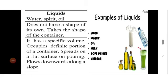Examples of solids are metal pieces, iron, sugar, wax, etc. Second is liquid. Liquid does not have a shape of its own; it takes the shape of the container. Liquid has a specific volume. If kept in a container it occupies the shape of the container, but if it is spread on a flat surface it starts flowing. Examples of liquids are water, oil, milk, juice, etc.